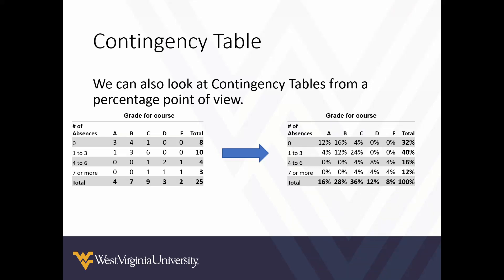Like with frequency tables, we can also change our point of view for a contingency table from frequencies and counts to percentages, where we can make each individual cell a percentage. For example, for zero absences and earning an A, there were three students out of 25 students total. Three divided by 25 multiplied by 100 is 12, so 12%.